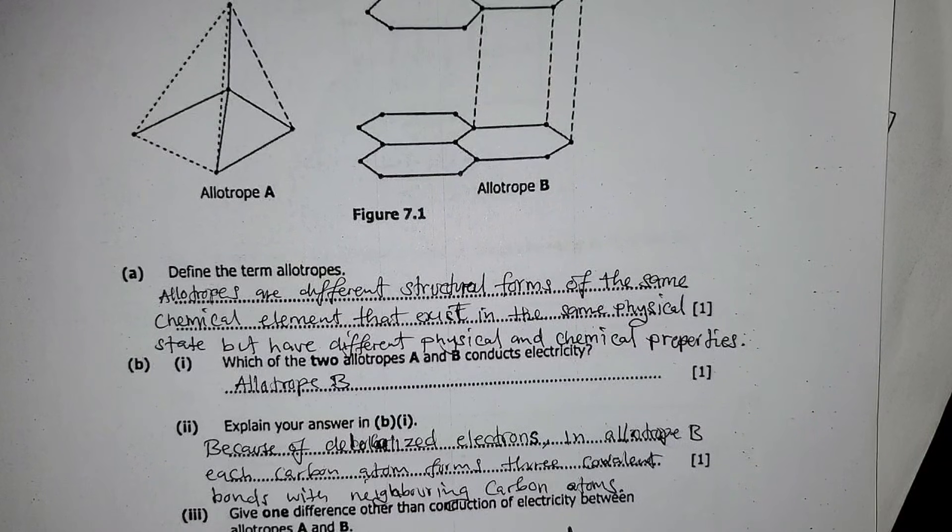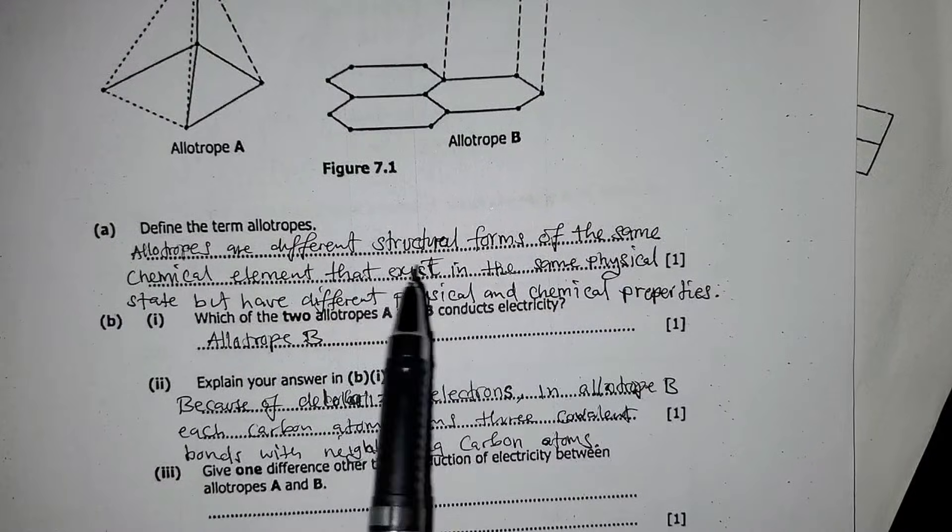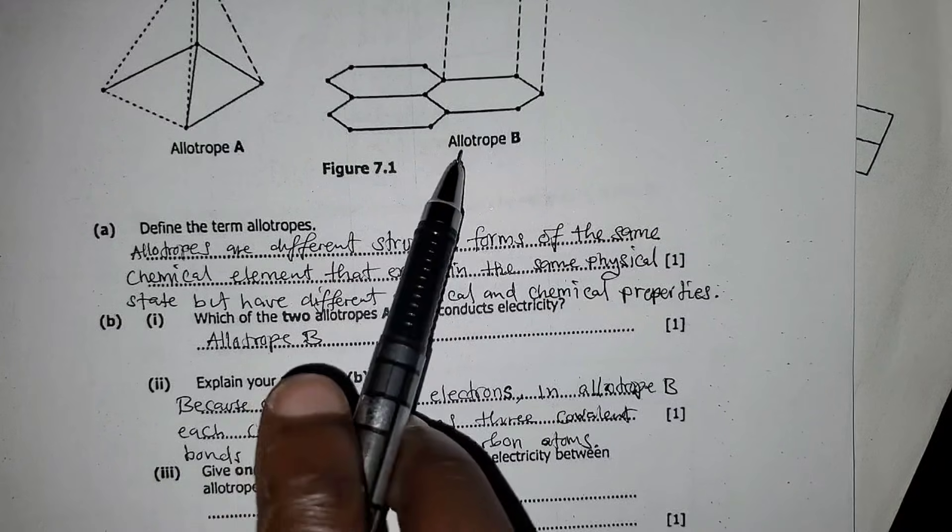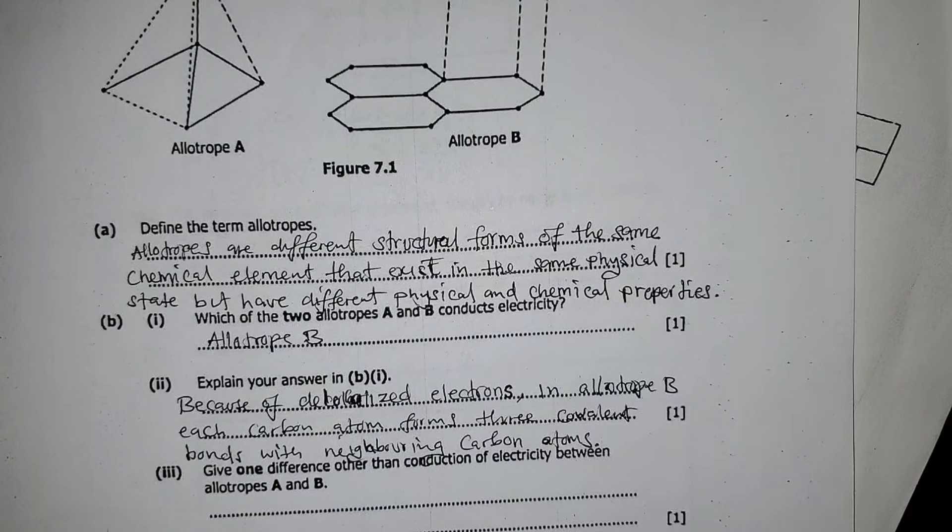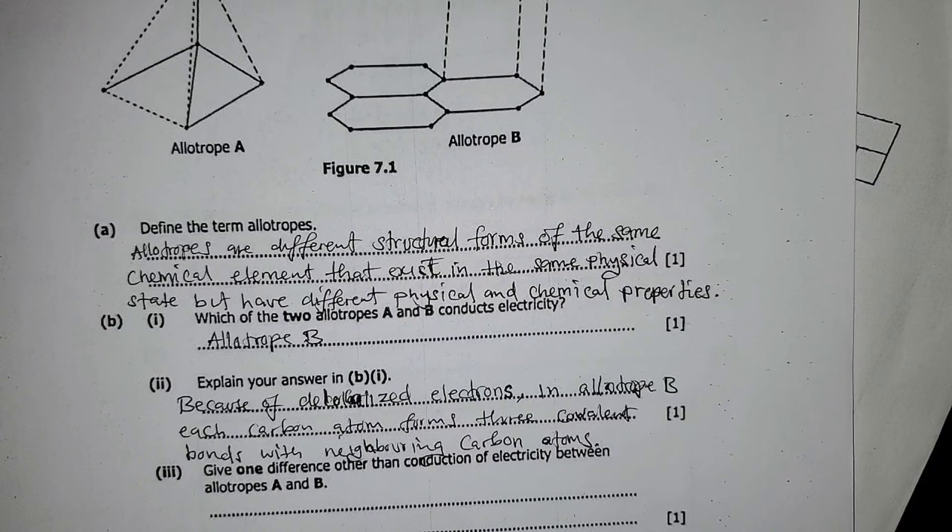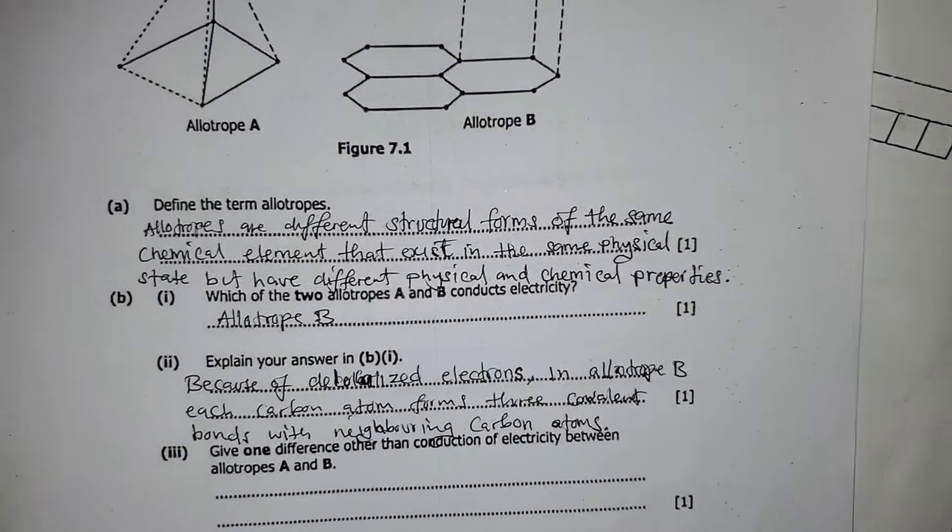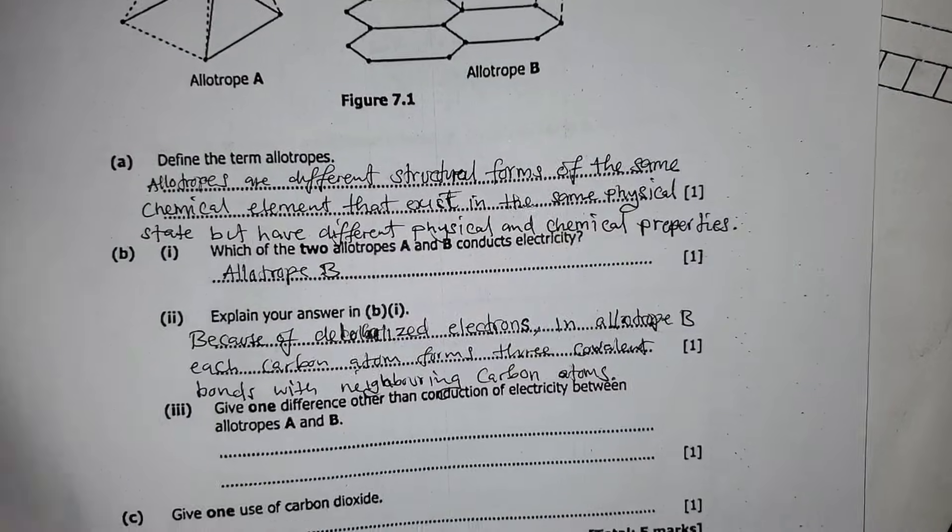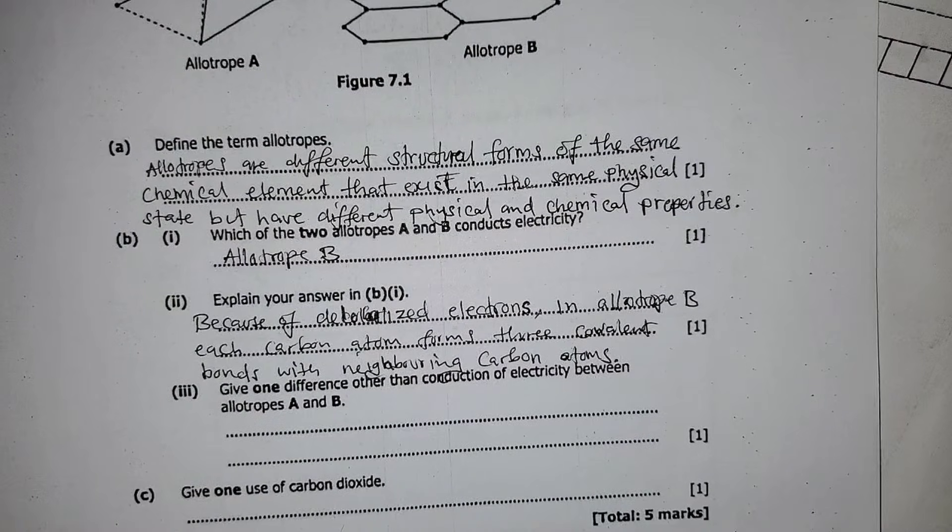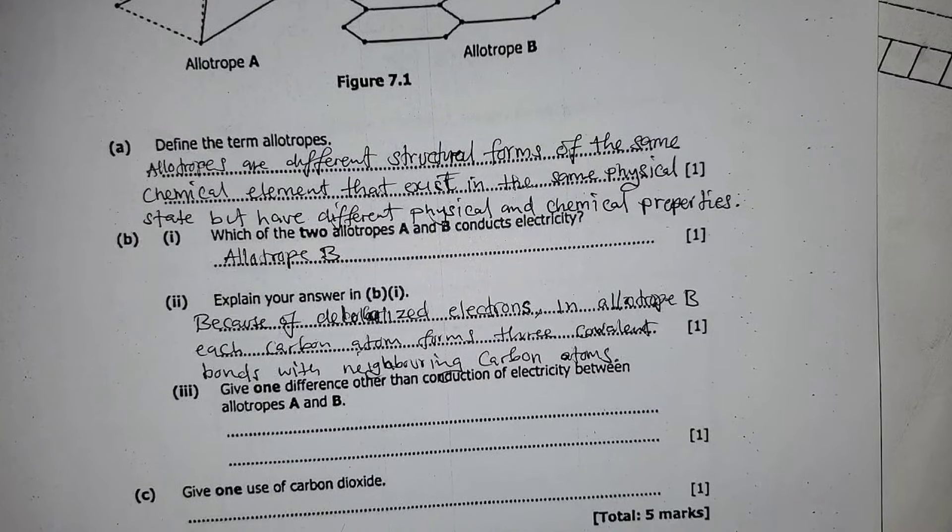You have a lot of reasons why allotrope B conducts electricity, okay. You can talk of the charge flow, you can talk about the mobile electron cloud, all right. So give me your answers in the comment section why allotrope B conducts electricity.